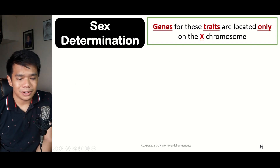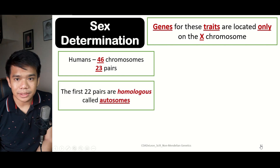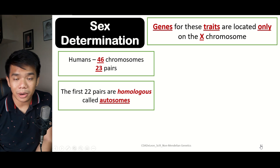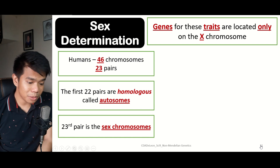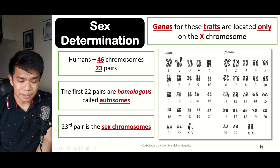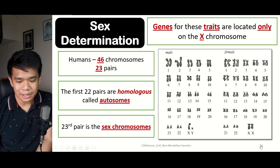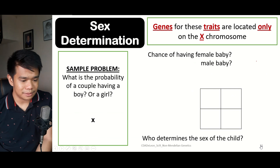How is sex determined in humans? Humans have 46 chromosomes represented through 23 pairs, each pair containing two chromosomes. The first 22 pairs are the autosomes, which are all homologous — meaning they are the same. However, the 23rd pair, the sex chromosome, is different because it determines sex itself. In males, the 23rd pair is XY; in females, it is XX.